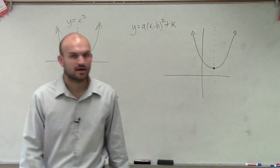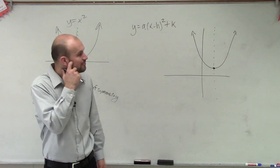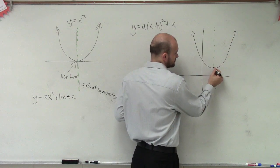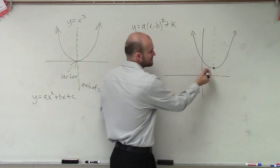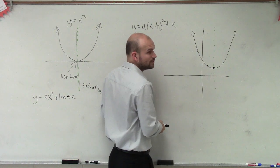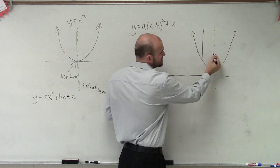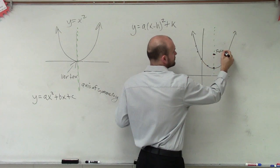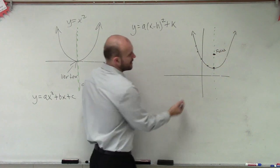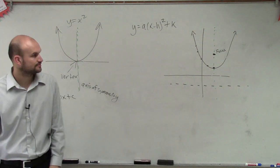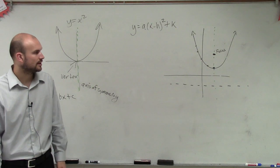So the definition of a parabola is going to be the set of points that are equidistant from a point, which we call the focus, to a line, which we call the directrix.